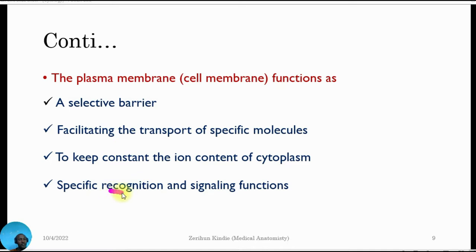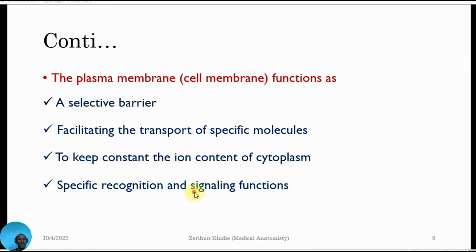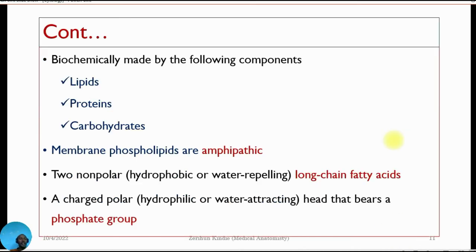Another function of the plasma membrane is specific recognition and signaling. The signaling function is performed by the plasma membrane, which is biochemically made from the following components: lipids — specifically phospholipids — and different types of proteins, which are important for the synthesis of the plasma membrane. It also contains carbohydrates.